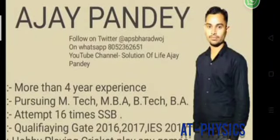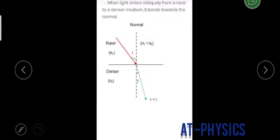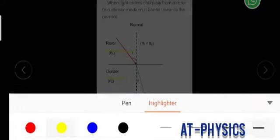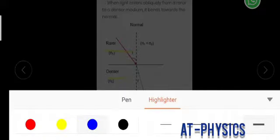Welcome back again. This is the next part of the revision of the physics class — please share and comment. So let me start. We have already studied about refraction. There is a very important concept: medium. There are two types of medium — the first one is rare and the other one is denser.